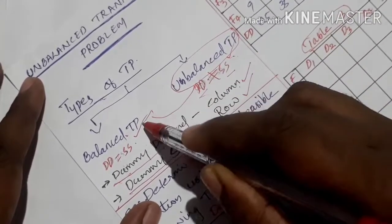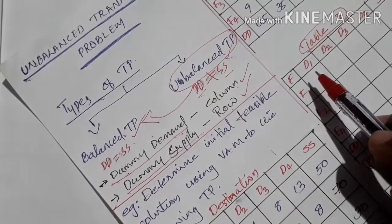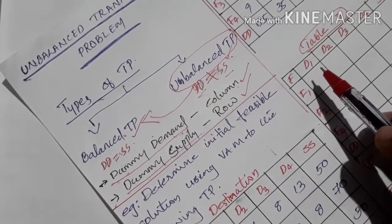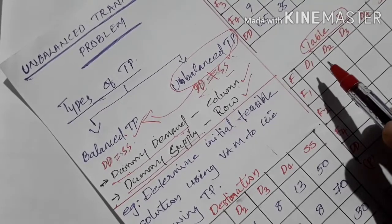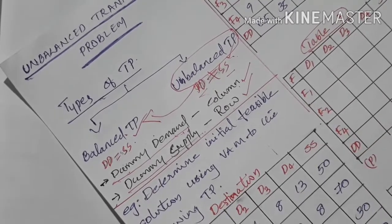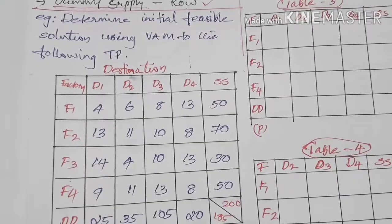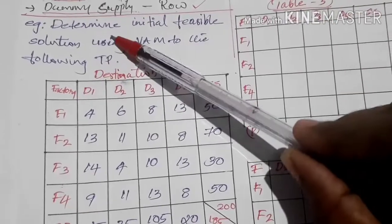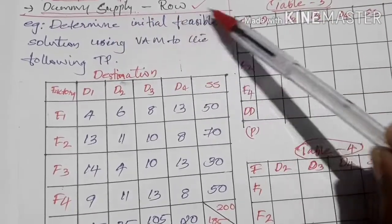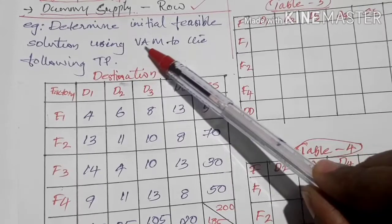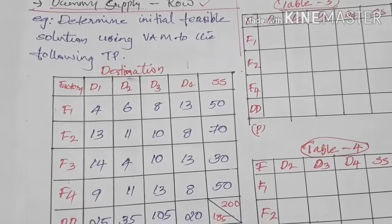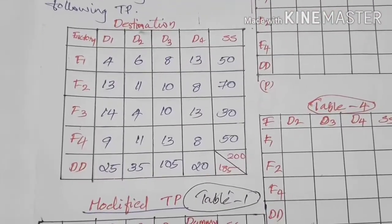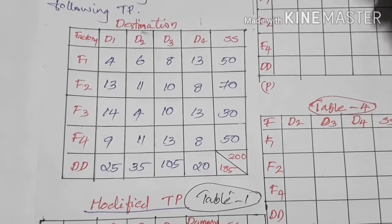To solve an unbalanced transportation table, we first convert it to a balanced transportation table, then we apply Vogel's Approximation Method or the least cost method to find the initial feasible solution. Let's look at an example: determine the initial feasible solution by using Vogel's Approximation Method for the following transportation table.